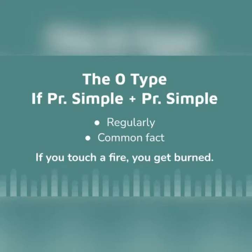We can make a zero conditional sentence with the help of two present simple verbs. For example, if you touch a fire, you get burned.